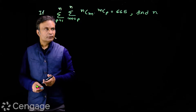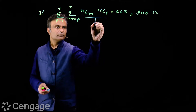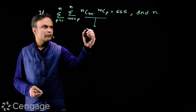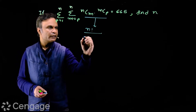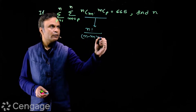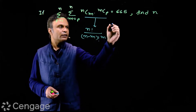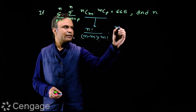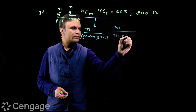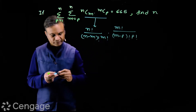First, we simplify this term. For that, we expand both binomial coefficients. We have n factorial divided by (n minus m) factorial multiplied by m factorial, multiplied by mCp which is m factorial over (m minus p) factorial multiplied by p factorial.